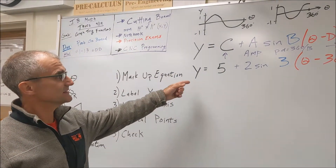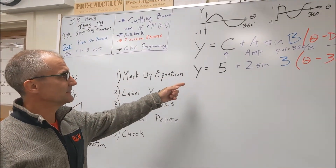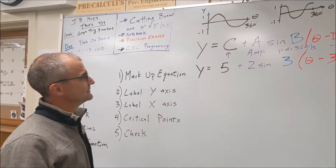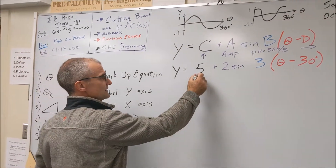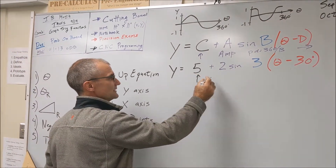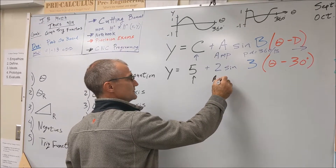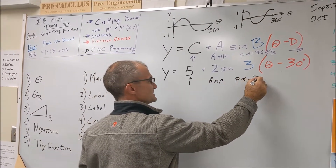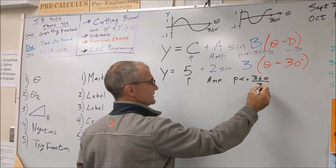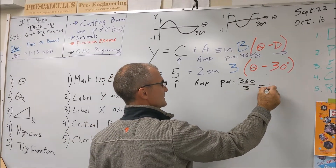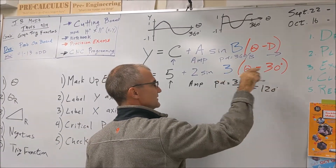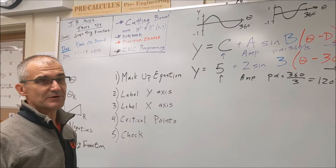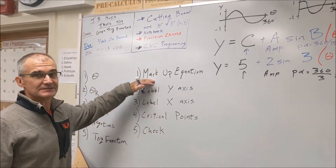Let's take a look at this example. Step one: mark up the equation. Vertical shift, amplitude, period is 360 divided by 3, which is 120, and this is phase shift pushed over. That's step one — mark up your equation.